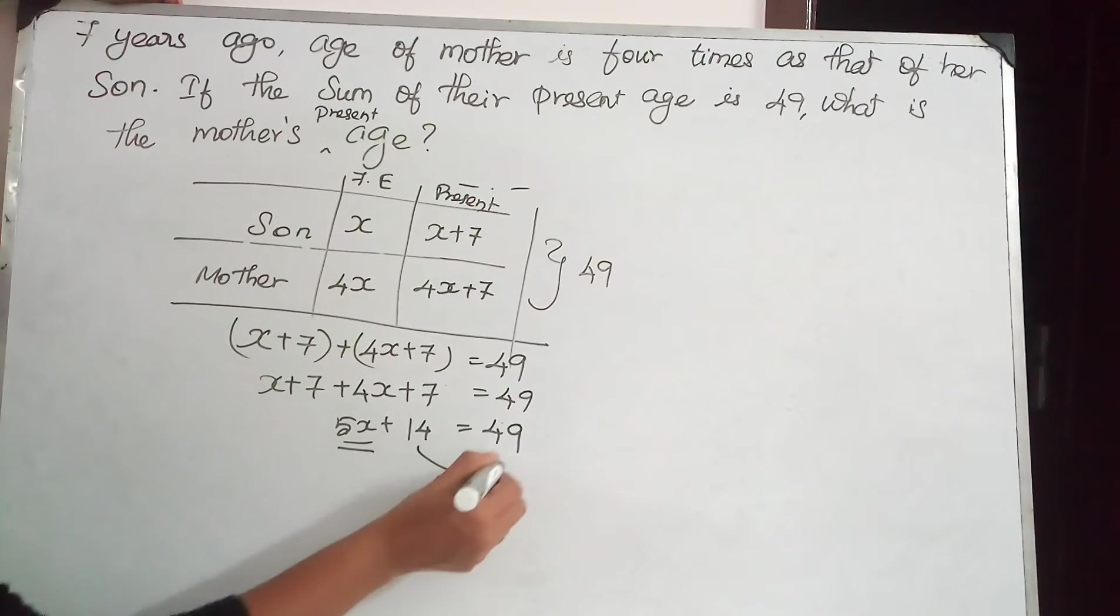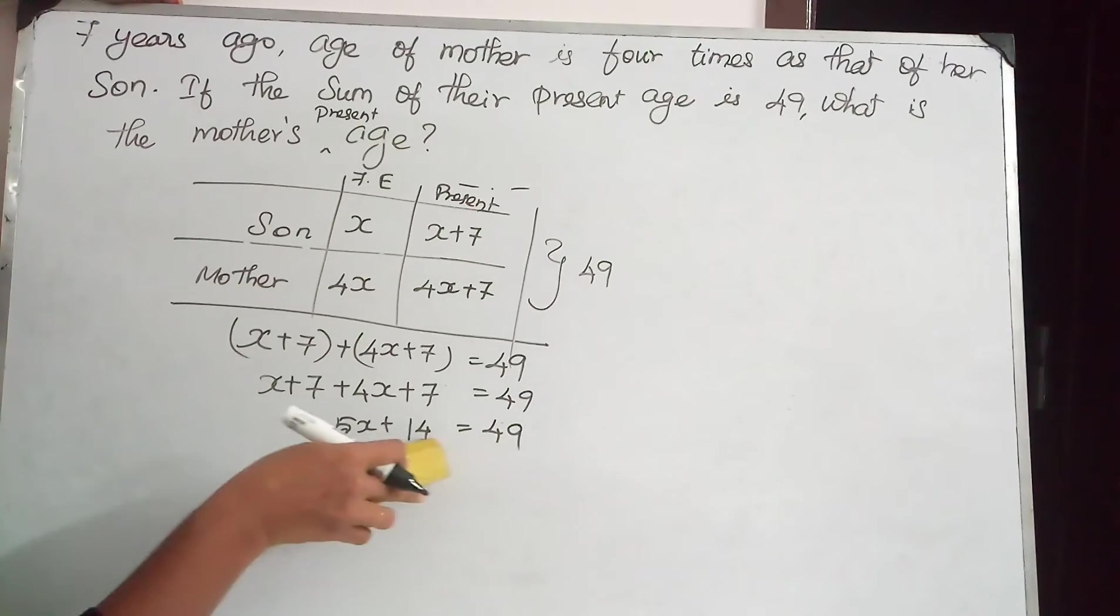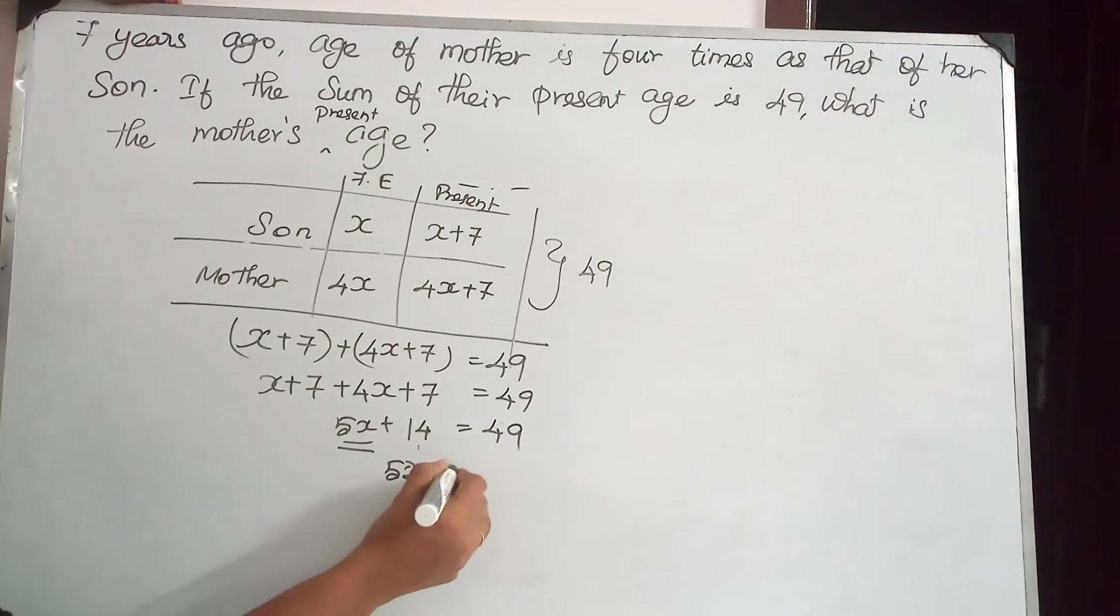Just keep the variable here. Bring this number to the other side. 5X is equal to 49 minus 14. Therefore, 5X is equal to 35. So value of X will be 7.